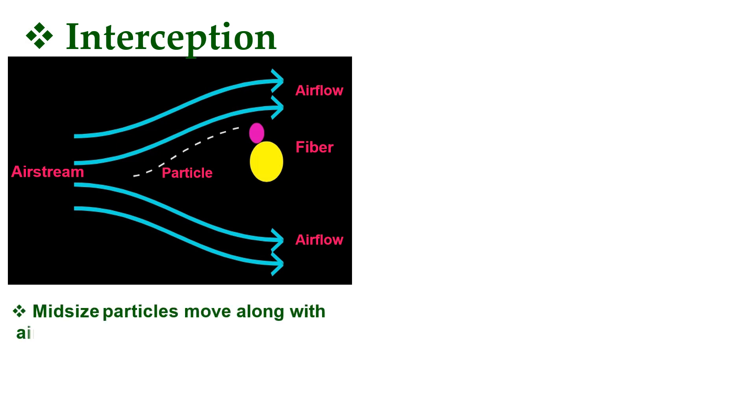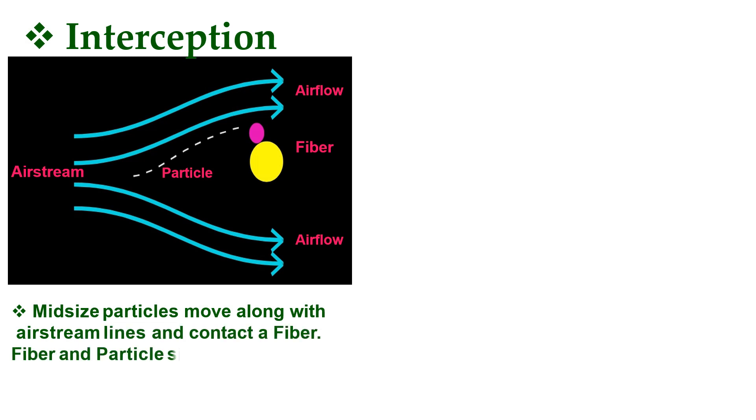The third method is interception filtration. Mid-size particles move along with air streamlines and contact a fiber. The interaction is dependent on the fiber and particle size. An example of an interception filtration method filter is bags in extended surface final filters.